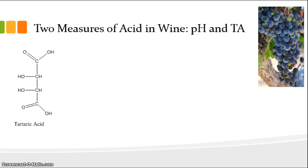Tartaric acid, shown here on the left, like any acid, will donate at least one proton. In the case of tartaric acid, it actually donates two protons — the one at the top and the one down here on this other oxygen at the bottom. Both of those are acidic and both of those can be donated.